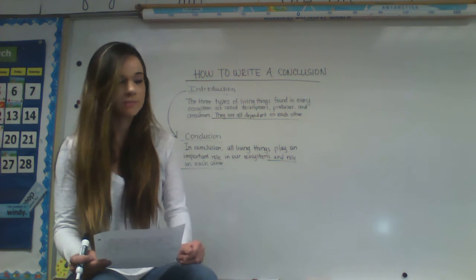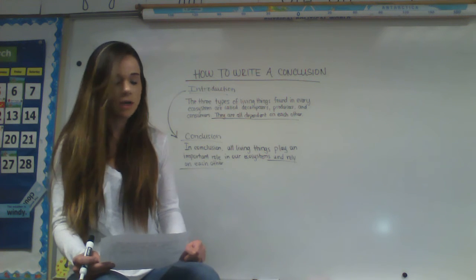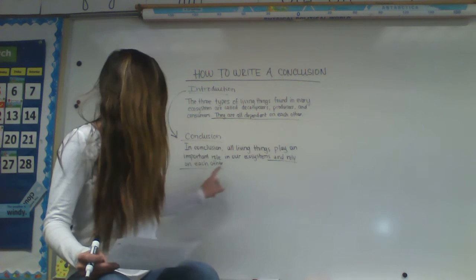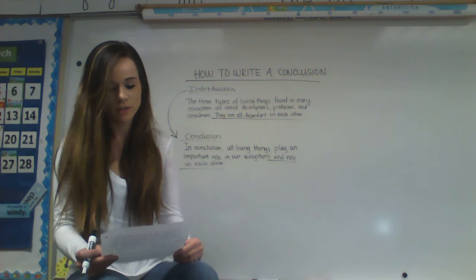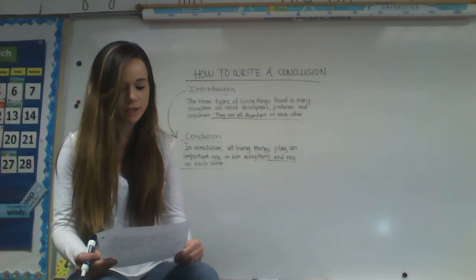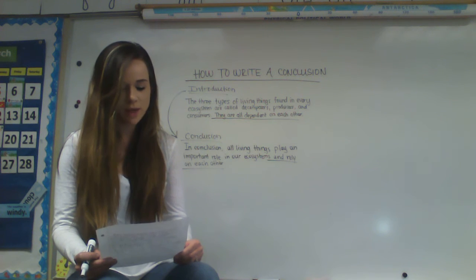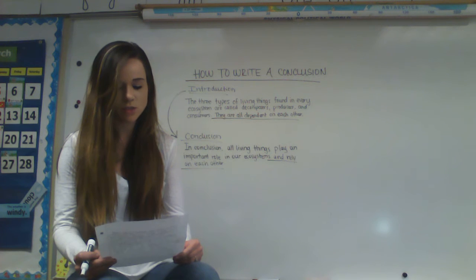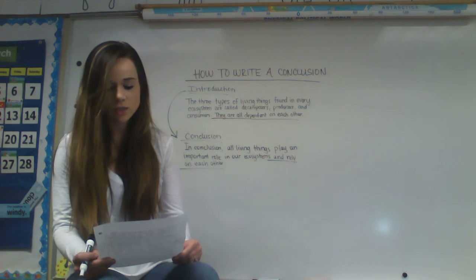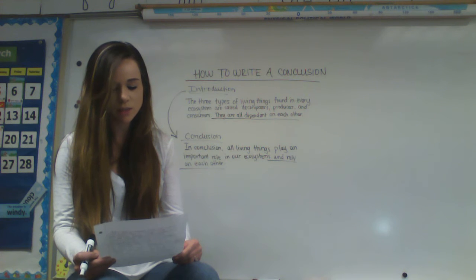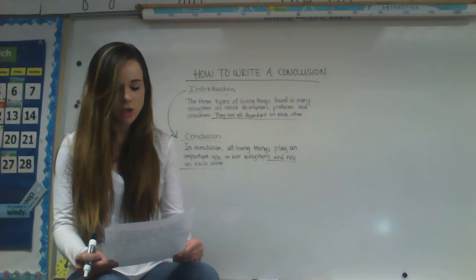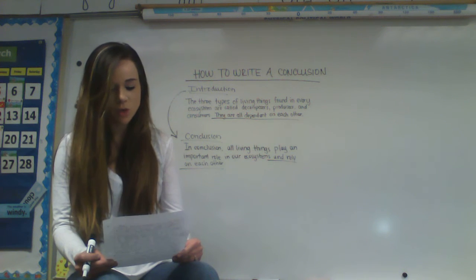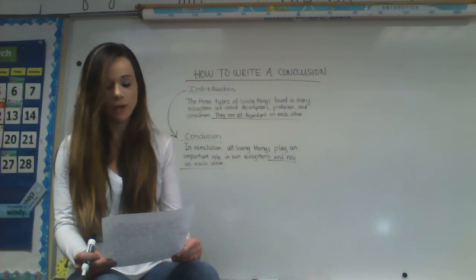Now I'm at my conclusion. In conclusion, all living things play an important role in our ecosystems and rely on each other. While producers make their own energy, herbivore consumers eat them for their energy. Then carnivore consumers eat those consumers to live. When the consumer dies, it is eaten by decomposers. Each type of living thing is dependent on one another for energy, which is what makes ecology what it is. We are all a part of our ecosystem and depend on each other to grow and survive.